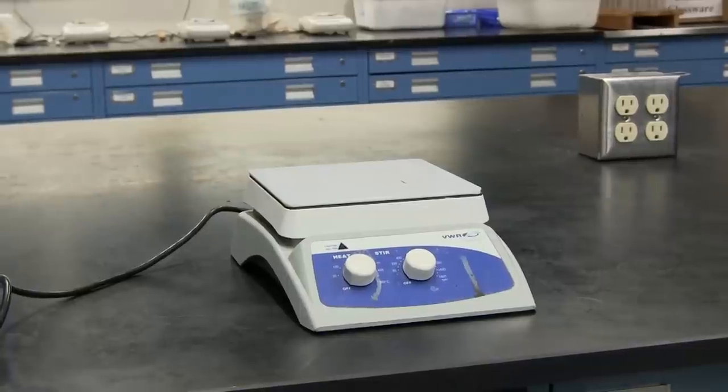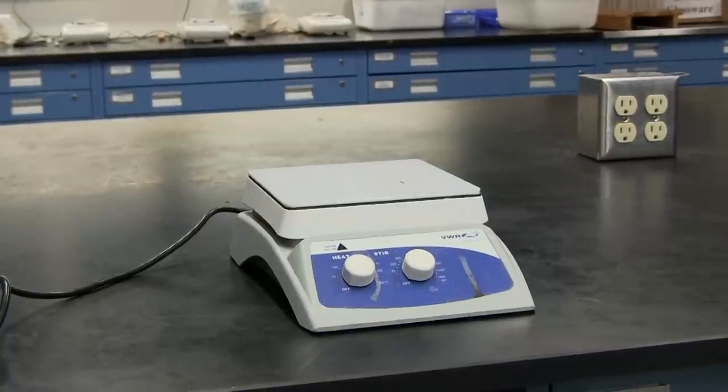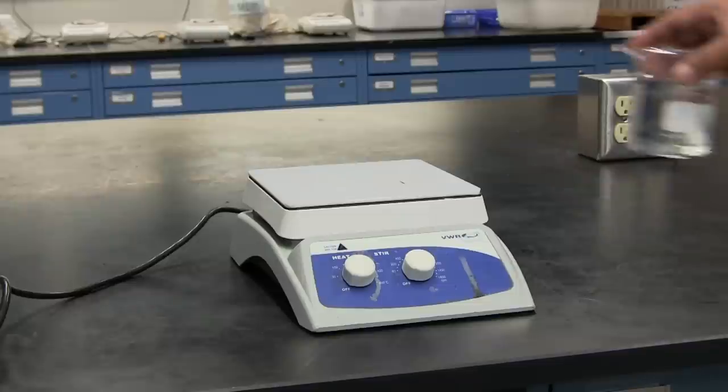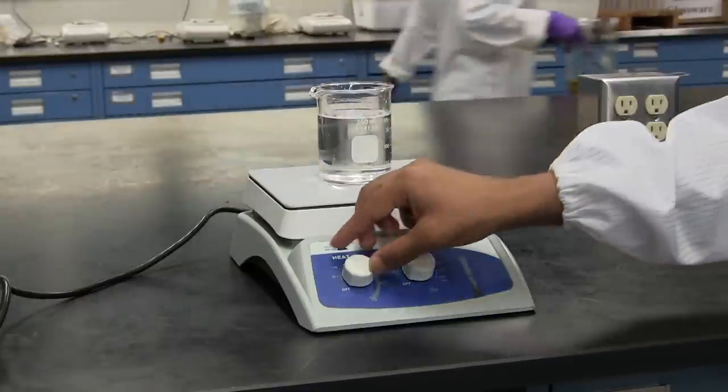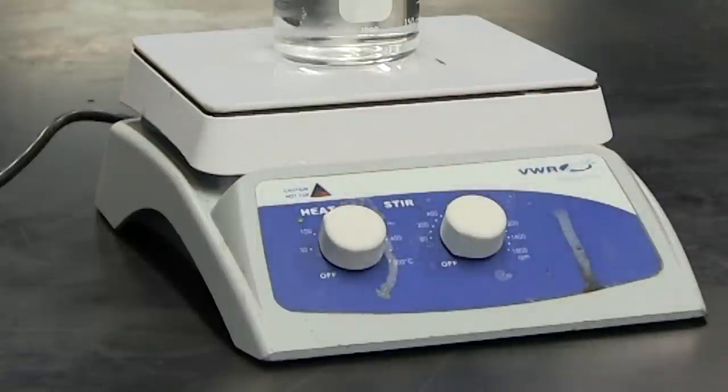While the glassware is drying, set up a hot plate on the bench outside the fume hood since the ether must be kept away from heat sources. Heat a 200 mL beaker of water on the hot plate until it is warm. Do not heat until boiling.